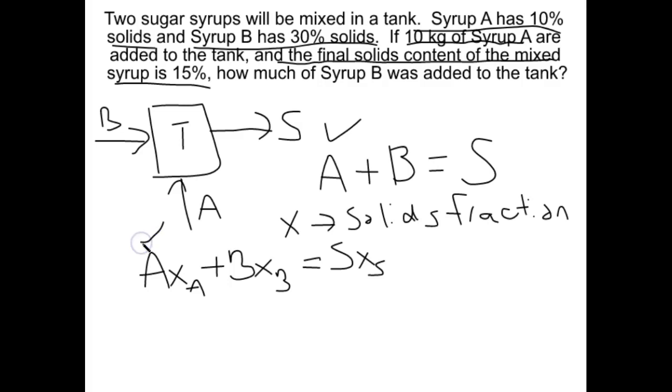Again we have A, we know the solids content of A, so we're good with that term. We don't know B but we know the solids content of B. And we don't know S but we know the solids content of S. So if we look at these two equations combined, we don't know B and we don't know S in either one of them. But that is okay because we've got two independent equations. We've got two equations, two unknowns, we can actually solve for both B and S.